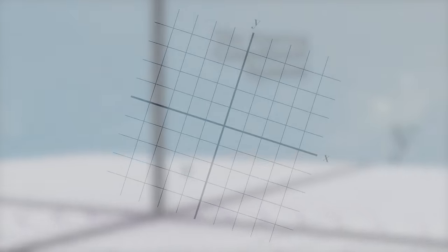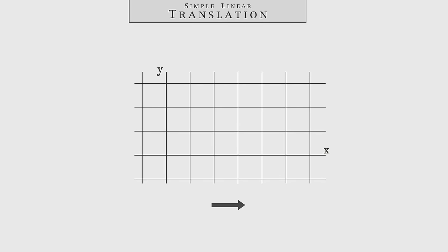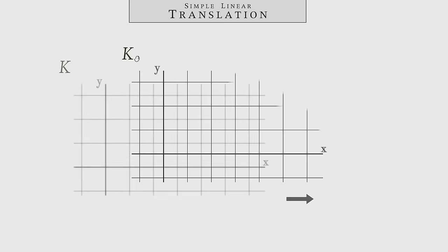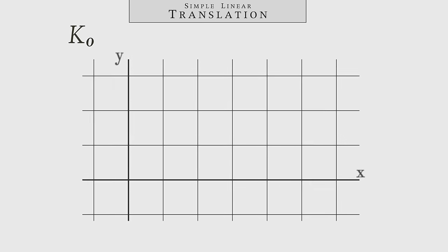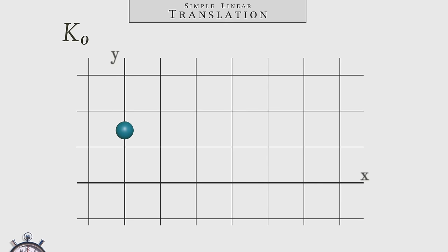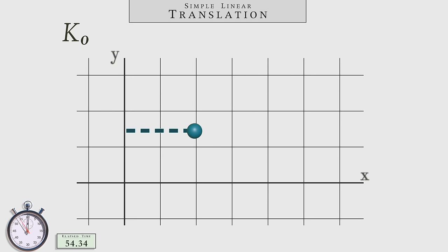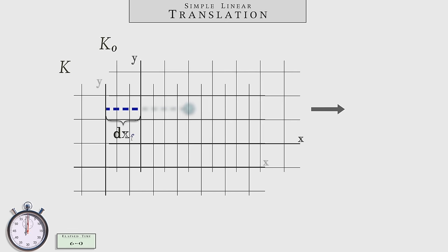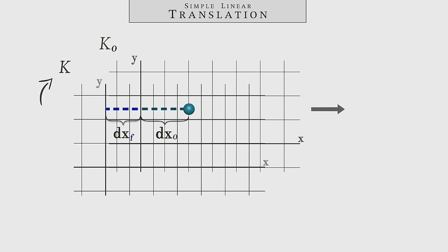It's always best to start with a simple case before building to a more complex one. Here it's the simple case of the linearly translated frame that first and foremost requires our attention. Let's consider two separate coordinate systems K and K0 that are in motion relative to one another. We're going to label the K frame as the rest frame, and the K0 frame as the motion frame.